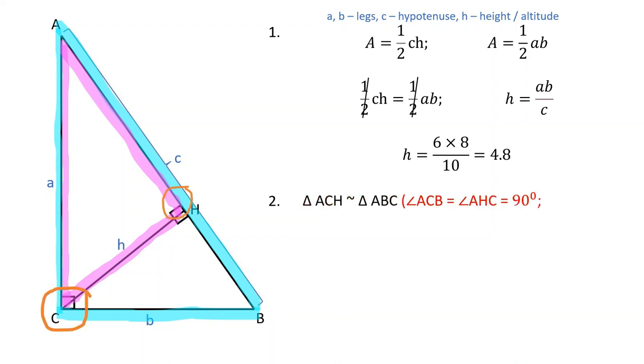Angles ACB and AHC are equal to 90 degrees and angle A is shared by both triangles. Therefore, the corresponding sides are proportional. AB over AC is equal to CB over CH.